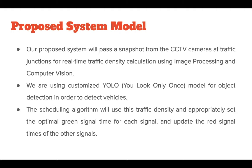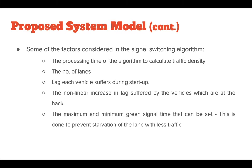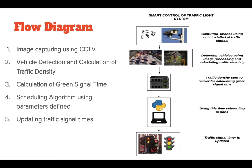How will it work? Our proposed system will pass a snapshot from the CCTV cameras at traffic junctions for real-time traffic density calculation using image processing and computer vision. We are using a customized YOLO model for object detection in order to detect vehicles. The scheduling algorithm will use this traffic density and appropriately set the optimal green signal time for each signal and update the red signal times of the other signals. Some of the factors considered in the signal switching algorithm are the processing time of the algorithm, the number of lanes, lag each vehicle suffers during startup, the non-linear increase in lag suffered by vehicles at the back, and the maximum and minimum green signal time that can be set. This is done to prevent starvation of the lane with less traffic. The above working is summarized in the form of a flow diagram.